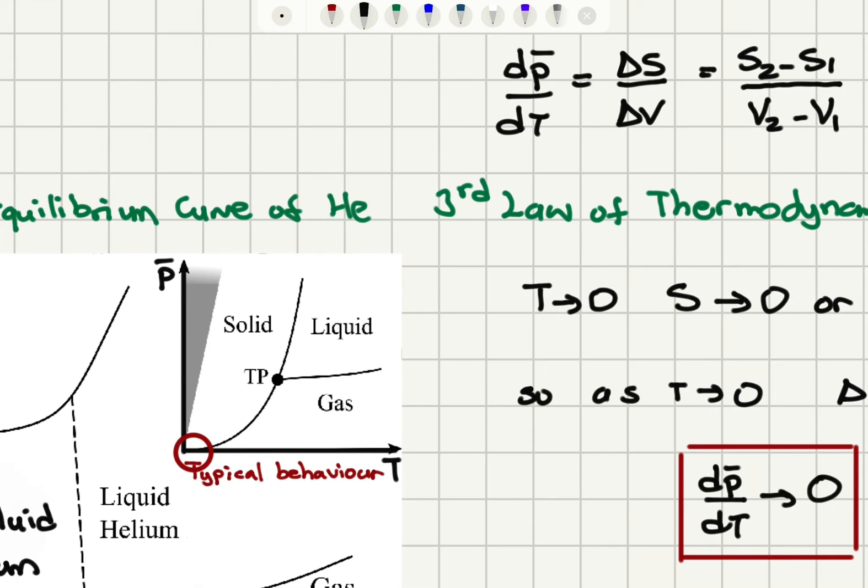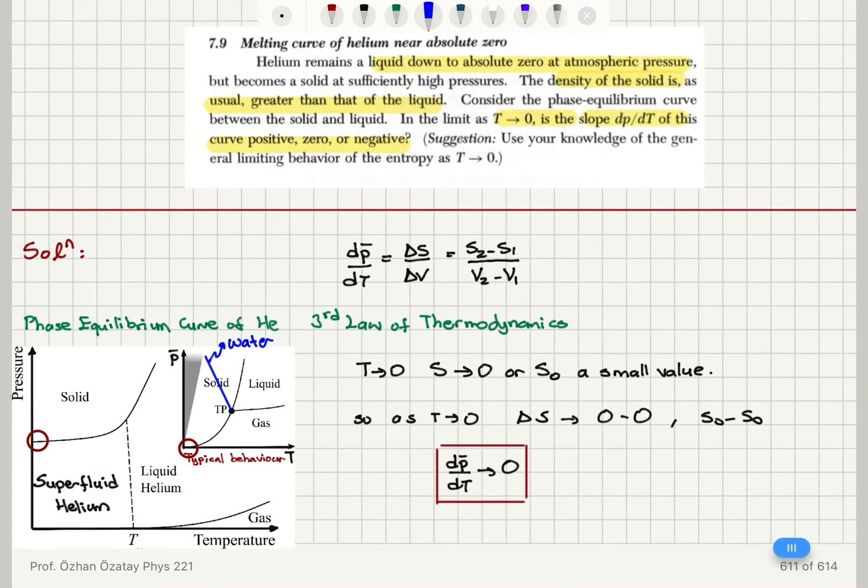for water we had a different situation. For water we had this dP/dT having a negative slope, so this was for water phase boundary.